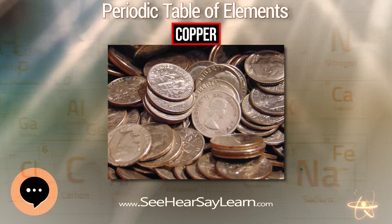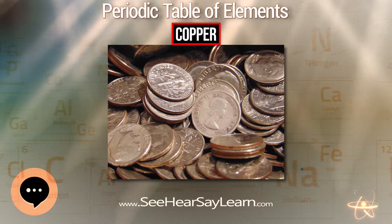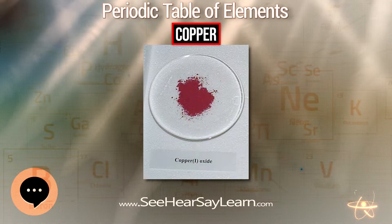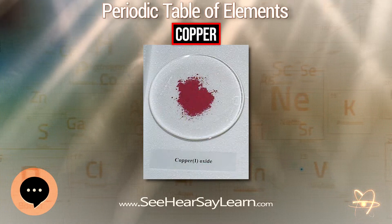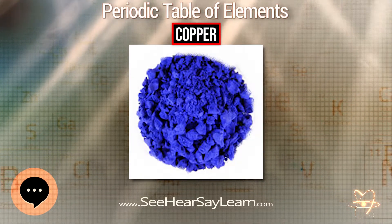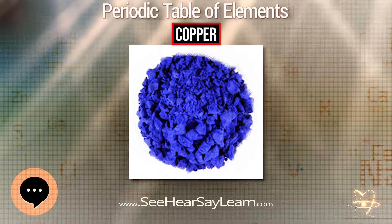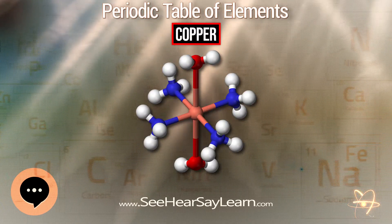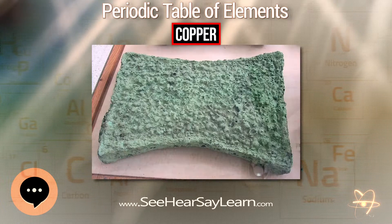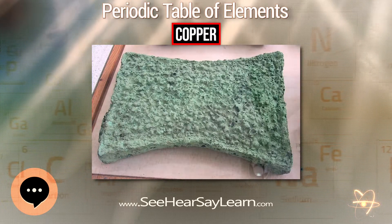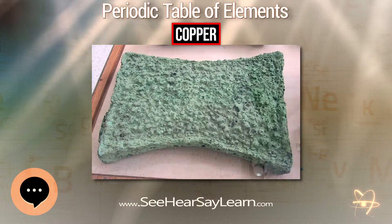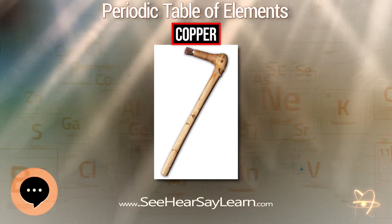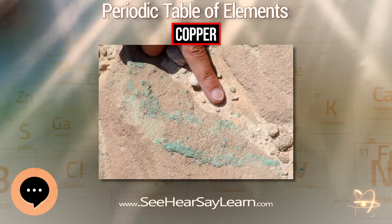Recycling is a major source of copper in the modern world. Because of these and other factors, the future of copper production and supply is the subject of much debate, including the concept of peak copper, analogous to peak oil. The price of copper has historically been unstable, increasing from a 60-year low of US$0.60/lb in June 1999 to $3.75/lb in May 2006.